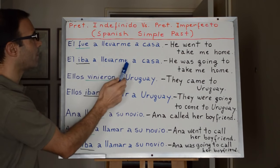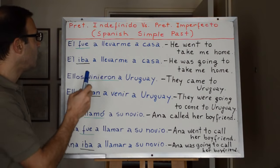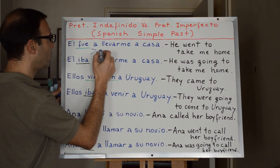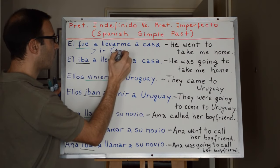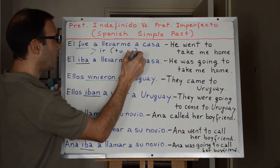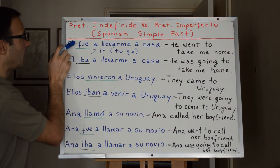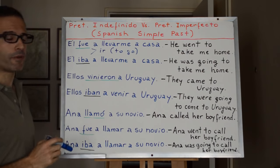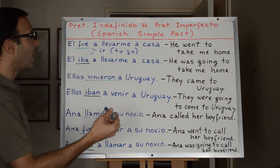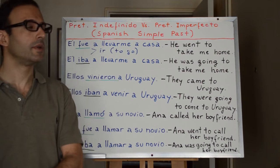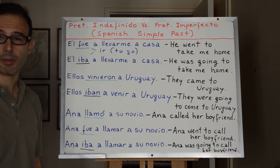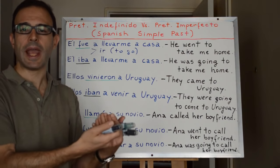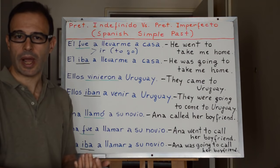Él iba a llevarme a casa — he was going to take me home. Both sentences use the verb ir, which means to go. Here it is conjugated in pretérito indefinido, and below in pretérito imperfecto. Él iba a llevarme a casa: he was going to take me home. Él fue a llevarme a casa: he went to take me home. As you can see, the first one suggests that something really happened — he actually took me home.